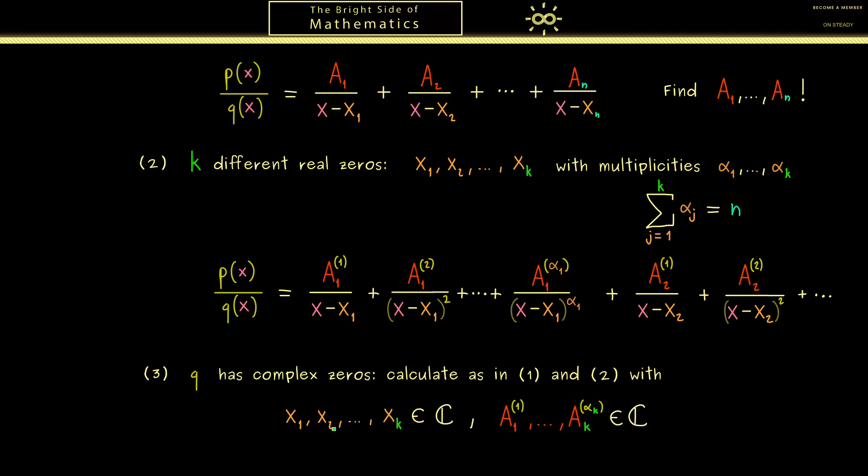In other words you can do exactly the same as before but now the zeros are complex numbers and the coefficients as well. In fact from the calculation side this does not change anything at all.